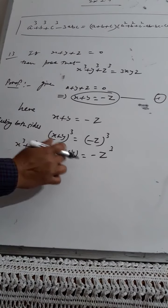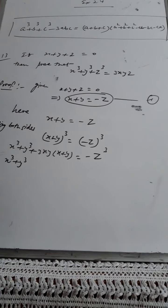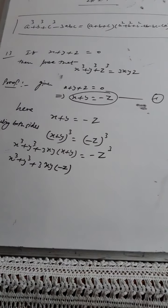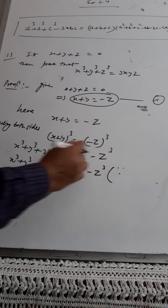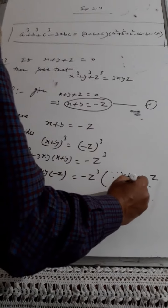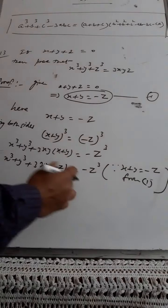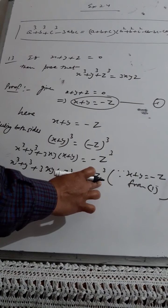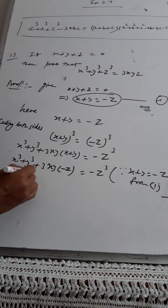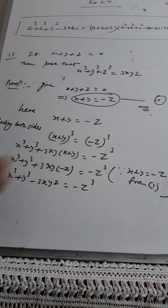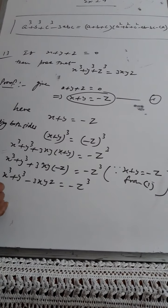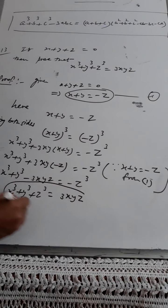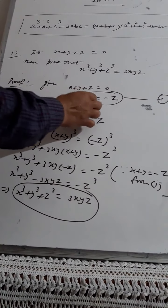So: x³ + y³ + 3xy(x + y) = -z³. Since x + y = -z from equation (1), substitute: x³ + y³ + 3xy(-z) = -z³, which gives x³ + y³ - 3xyz = -z³. Shifting -z³ to the left side: x³ + y³ + z³ = 3xyz. This is what we needed to prove.